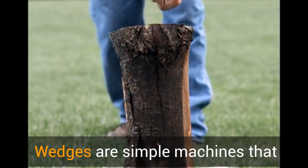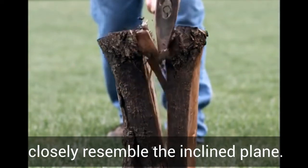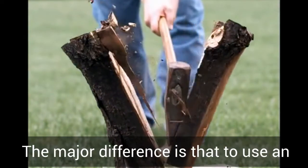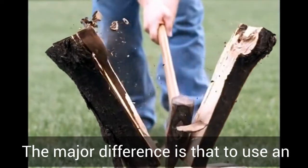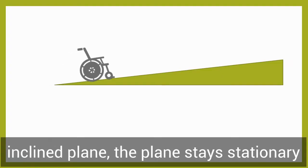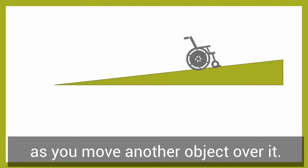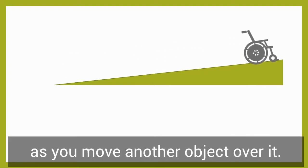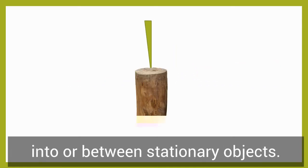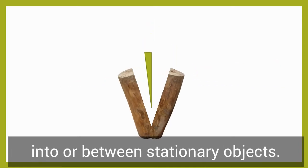Wedges are simple machines that closely resemble the inclined plane. The major difference is that to use an inclined plane, the plane stays stationary as you move another object over it. A wedge, on the other hand, is driven into or between stationary objects.